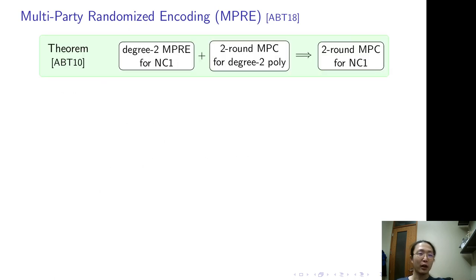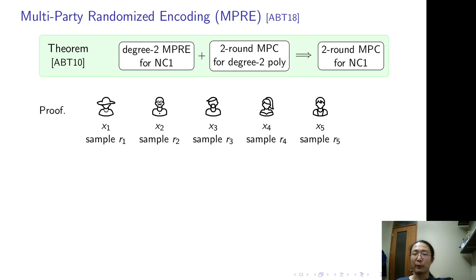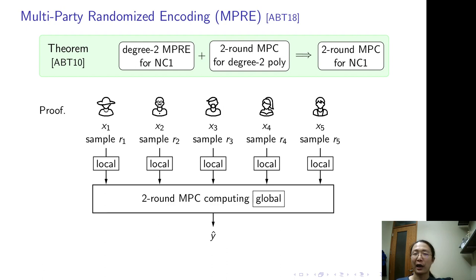The theorem says, combining a degree 2 MPRE for NC1 with a 2-round MPC computing degree 2 function gives you a 2-round MPC computing NC1. And here is the proof. Parties individually sample MPRE local randomness, then individually compute the local parts of the MPRE encoding. The global part of the MPRE encoding is computed by a 2-round MPC protocol, and this is the only interaction. Finally, parties locally decode the output. That's it.